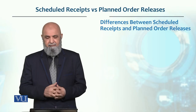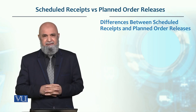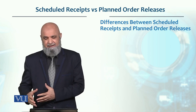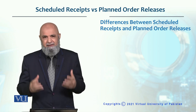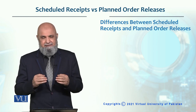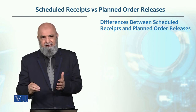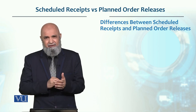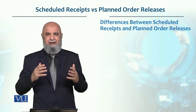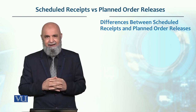Now there are two rows that you will see in this MRP record. One is called Scheduled Receipts and one is Planned Order Releases. What is the difference between the two? Planned Order Releases are something which we plan on the basis that production will start. Scheduled Receipts are basically the ones where the order has already been released — the time is fixed that we have to receive the order.